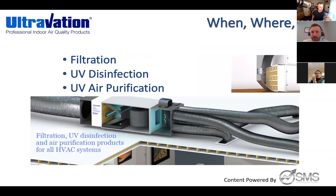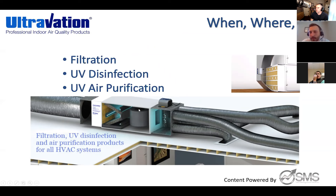We're going to look at filtration, UV disinfection, and UV air purification. To start off the presentation, we're going to look at a residential application and a full product setup. First, the Orion product — that is an ionization product. It's going to electrically charge particles in the air, clump those up and make them bigger, allowing them to be caught in your air filter better.